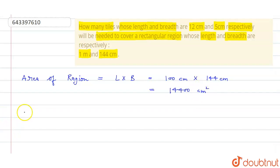Now we need to find the area of one tile. That is equals to length into breadth. Length is 12cm times breadth is 5cm, and that is equals to 60 square cm.